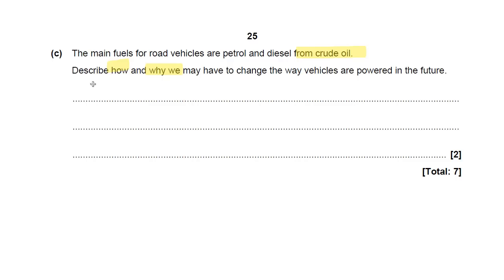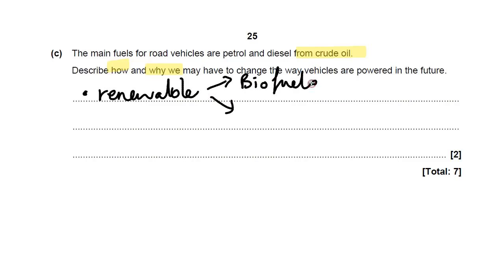We're going to have to change to some form of renewable energy. The two obvious ones in this case are either biofuels — for biodiesel, you can grow a crop, turn it into diesel and use it in normal cars — or solar power. The mark scheme specifically says not just saying electric cars, because electric cars need to be charged from mains electricity, and our mains electricity largely comes from fossil fuel power stations at the minute.